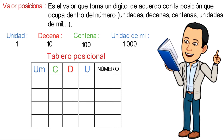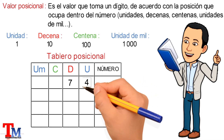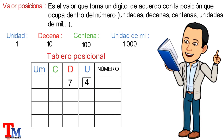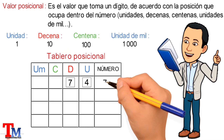Como primer ejemplo tenemos el dígito 4 y el dígito 7, donde el valor 4 se encuentra en la columna de las unidades y como ésta vale 1 conservaremos este valor, y el dígito 7 se encuentra en la columna de las decenas y como ésta vale 10 este valor se transformaría en 70. Luego sumando 70 más 4 nos quedaría el número 74.